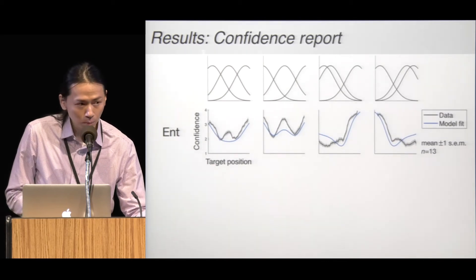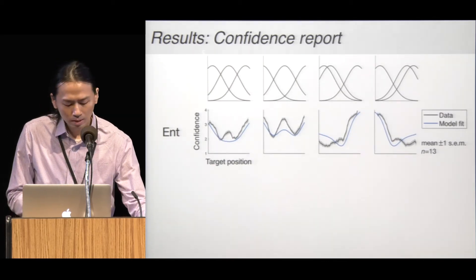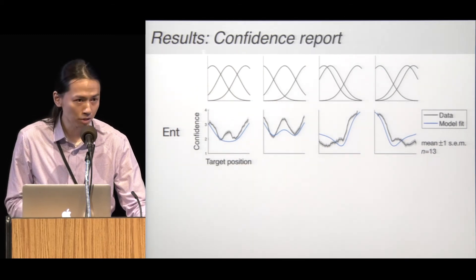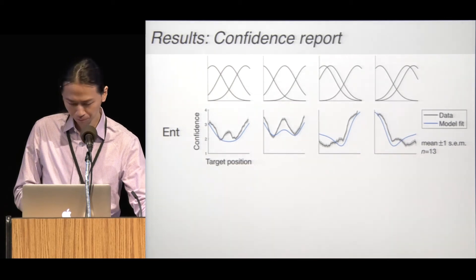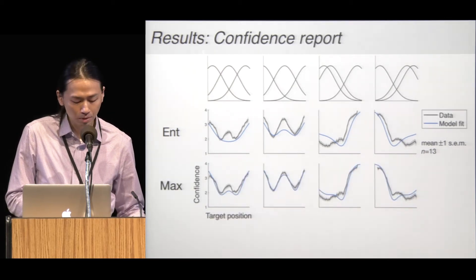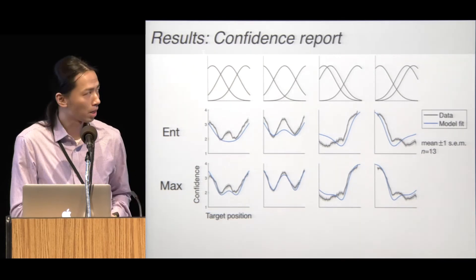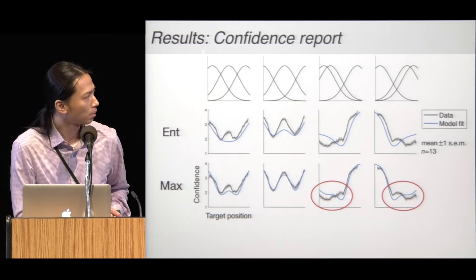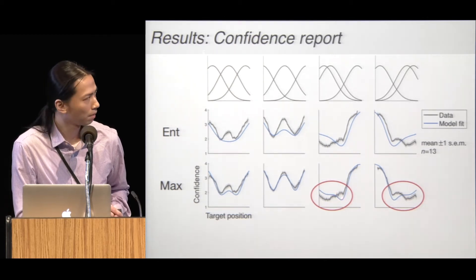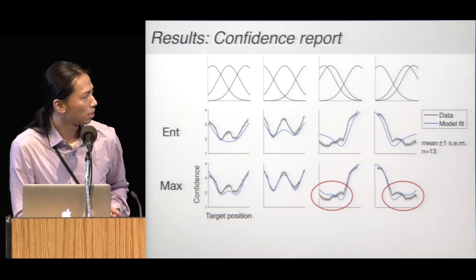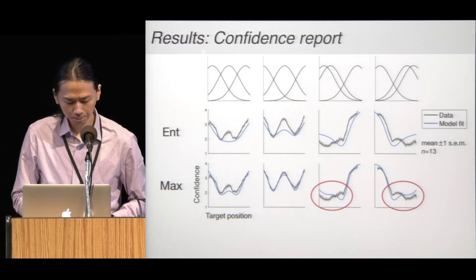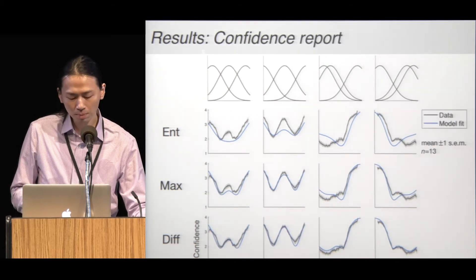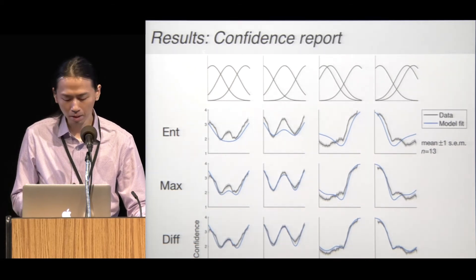Here I plot the data with the model fit. The model fit is the blue curve. We can see that the entropy model is not a good fit to the data. We can see clear deviations in all four conditions. The Max model generally captures the data, but with some mismatch. For example, when the three groups are asymmetrically distributed, the model predicts there's a dip here and confidence goes up, but the data show that the confidence is very low for the entire range. Here is the fit of the difference model. The diff model seems to provide a better fit compared to the other two models.